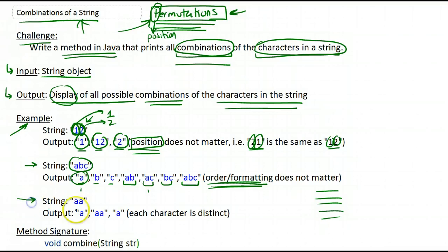And finally, this is another example which serves to show that each character is treated as a distinct character. So here, despite the fact that we have two similar characters, A and A, we still have the same thing as what we had here.